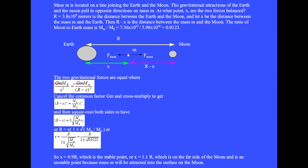Cancel the common factor G times little m and cross-multiply to get (R minus x) squared equals the ratio of the mass of the Moon to the mass of the Earth times x squared. Square root both sides to have R minus x equals plus or minus the square root of the mass ratio times x, or R equals x times (1 plus or minus the square root of the mass ratio), or x equals R divided by (1 plus or minus the square root of M_Moon over M_Earth). Since the ratio of the masses is 0.0123, we get x equals 0.9R, which is a stable point, or x equals 1.1R, which is on the far side of the Moon and is an unstable point because mass m will be attracted into the surface of the Moon.